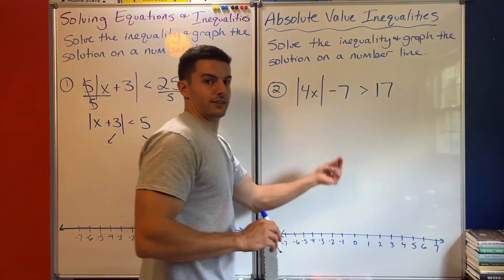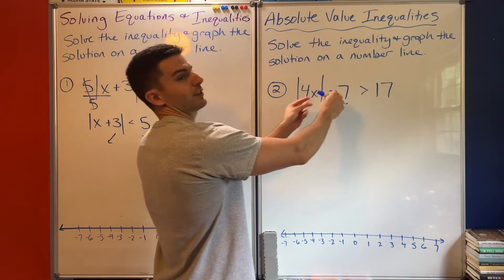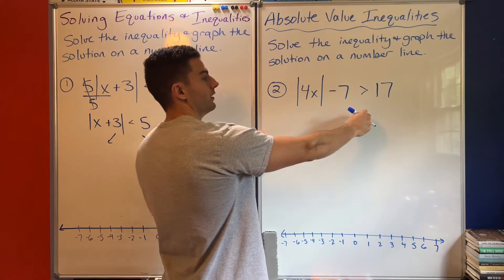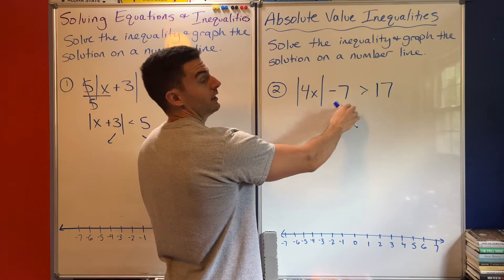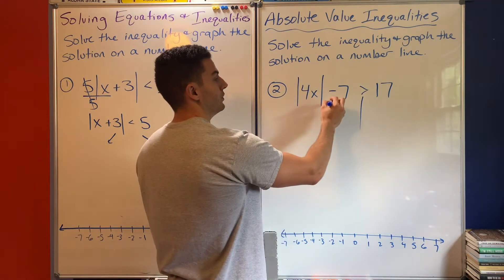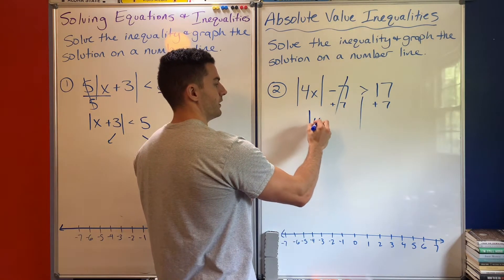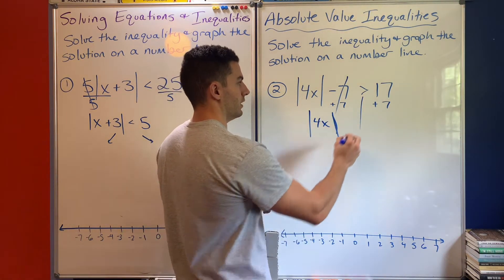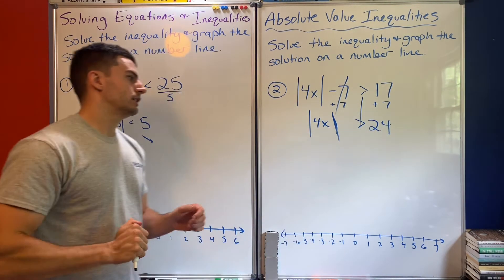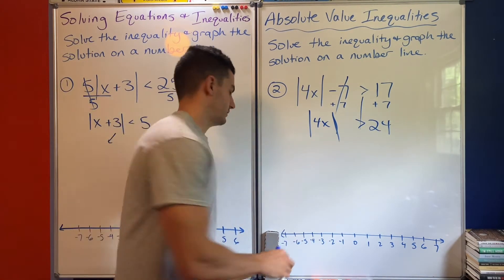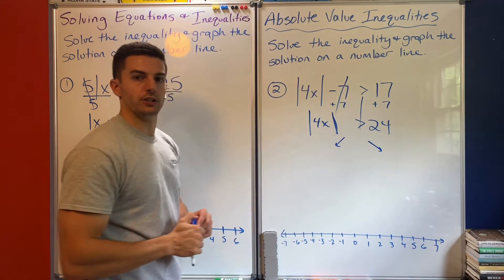For number two, let's get it down to that step as well. I can't split this until the absolute value is by itself, and the only thing getting in the way is this minus 7. So I plus 7 from both sides, and I'm left with absolute value of 4x is greater than 24. Now the absolute value is by itself and I'm ready to split both of these.